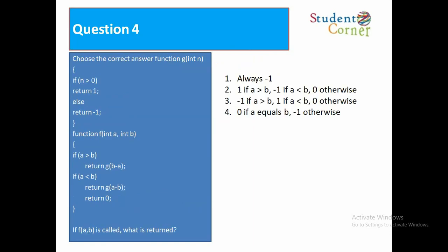Question number 4. Choose the correct answer. Function g(int n): if n greater than 0, return 1, else return minus 1. Function f(int a, int b): if a greater than b, return g(b minus a). If a less than b, return g(a minus b). If f(a, b) is called, what is returned?